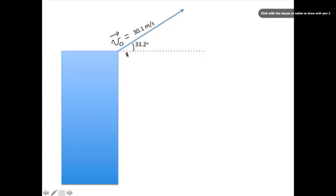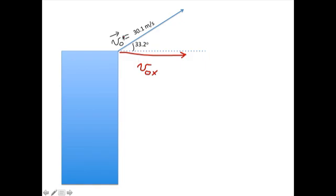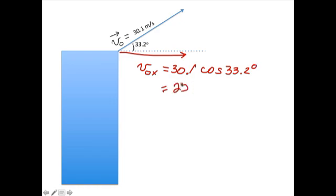What we have to do now, regardless of what else the problem asks, is to break this into components. So this has an x component, v-naught-x. This does not get an arrow over it — the vector has two components, x and y, and this is just the x component. It is equal to 30.1 times the cosine of 33.2 degrees, which gives 25.19 meters per second.